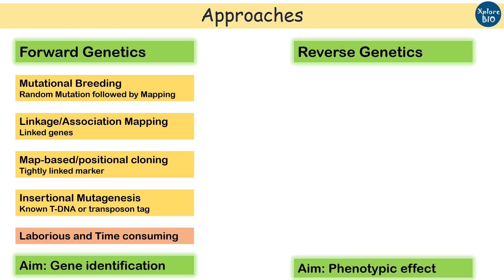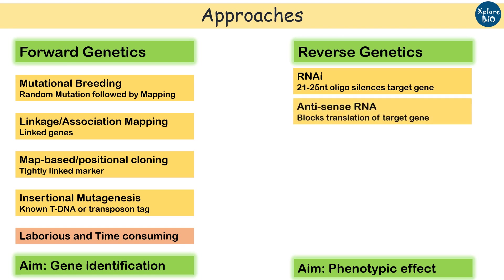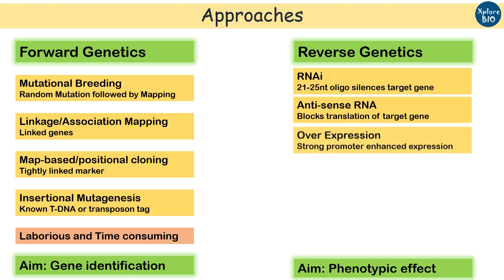In reverse genetics, siRNA — 21 to 25 nucleotide short oligonucleotide sequences — are used to silence the expression of a target gene. Antisense RNA targets the mRNA and is used to block translation. Gene overexpression is another approach, where the gene is attached to a strong promoter and transformed into the host.